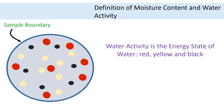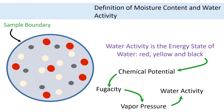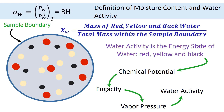Water activity is related to the energy state of water, which is related to the chemical potential of water in the sample. Chemical potential is then related to the fugacity of water molecules, and fugacity is related to the vapor pressure of water, and vapor pressure is related to the water activity. Water activity is the ratio of water vapor pressures in a food and pure water. Moisture content is defined as the mass of all water molecules divided by the total mass of all contents inside the boundary.